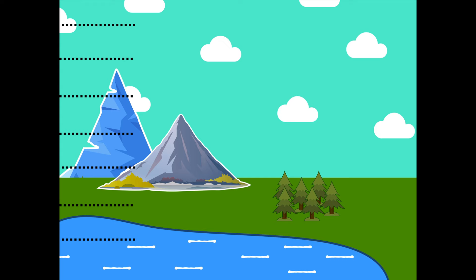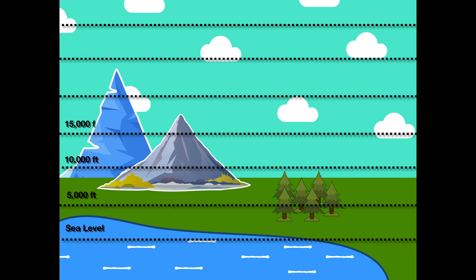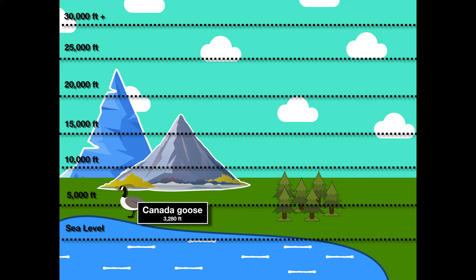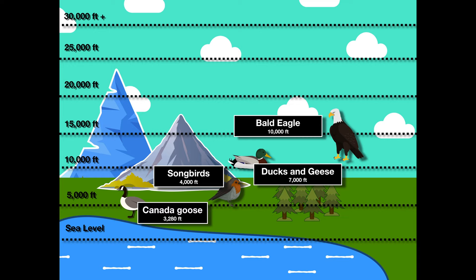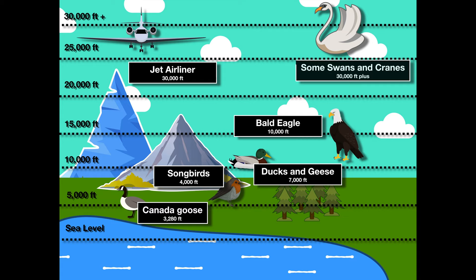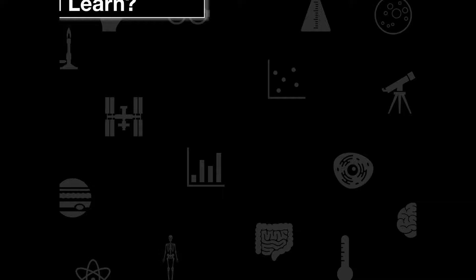A few birds do fly near 30,000 feet. The Canada goose has a flight range of about 3,280 feet; most songbirds fly around 4,000 feet; ducks and geese up to 7,000 feet; eagles and falcons between 10,000 and 15,000 feet; and some swans and cranes actually fly above 30,000 feet — the same altitude as a jet airliner. As birds move to higher altitudes, their respiratory systems must be more efficient because there is less oxygen available.